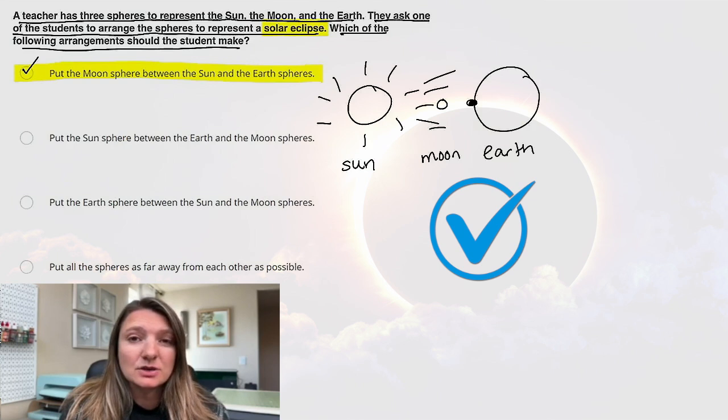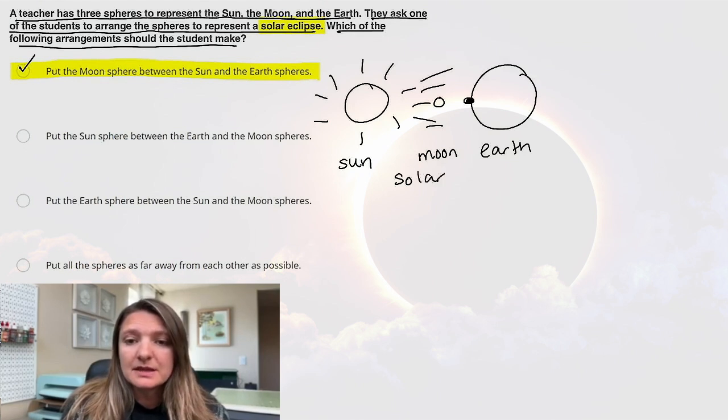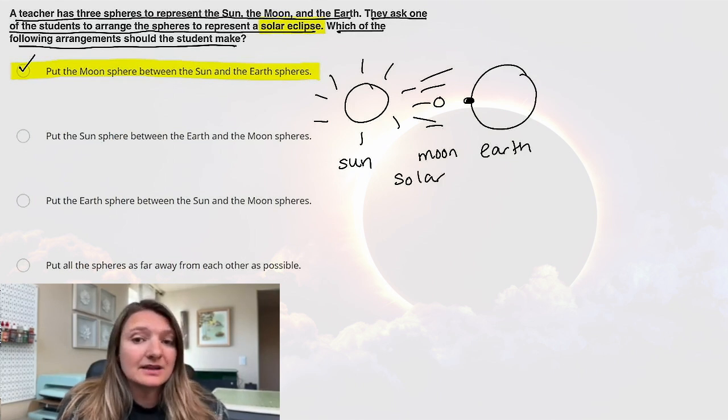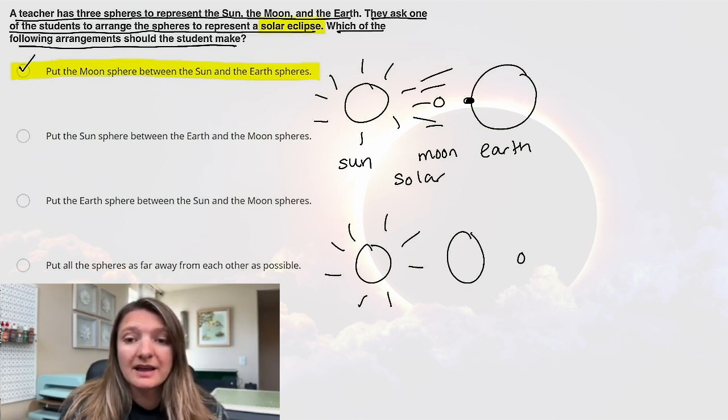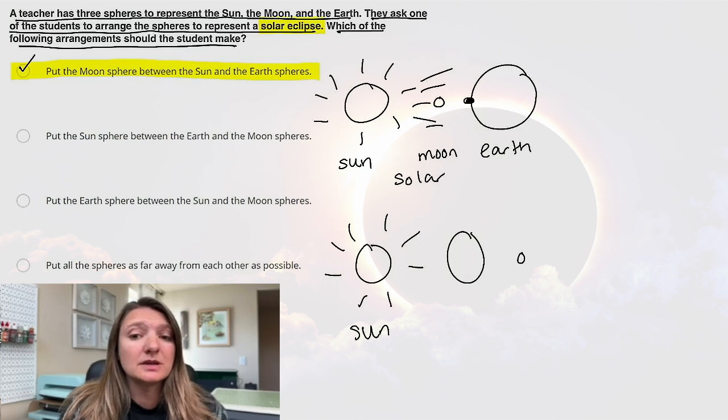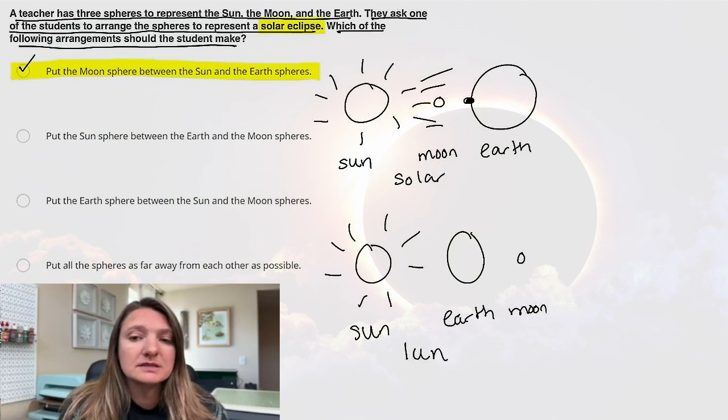But let's see if they actually ask you about a lunar eclipse. This would be specifically for a solar eclipse. Let's say they ask you about a lunar eclipse though. Here we have the sun, and then the earth is going to be in between the moon and the sun. That is going to be a lunar eclipse. So if they ask about that, that is going to be the lineup for a lunar eclipse.